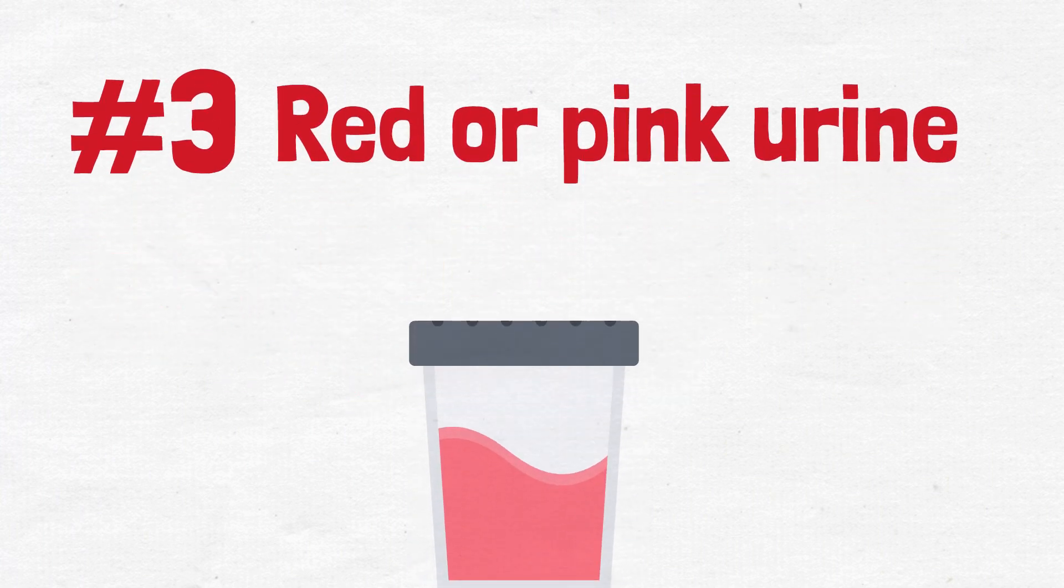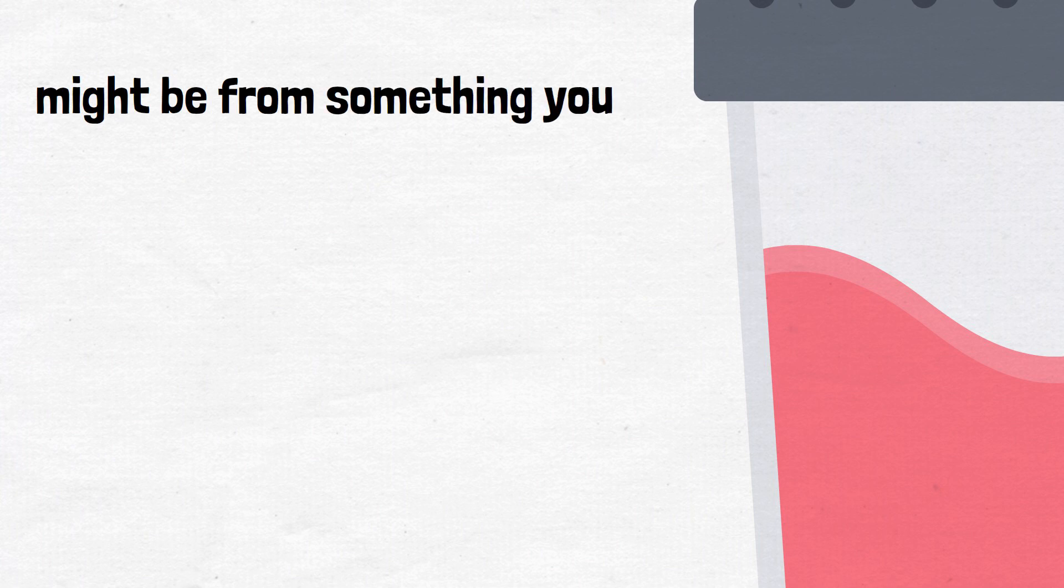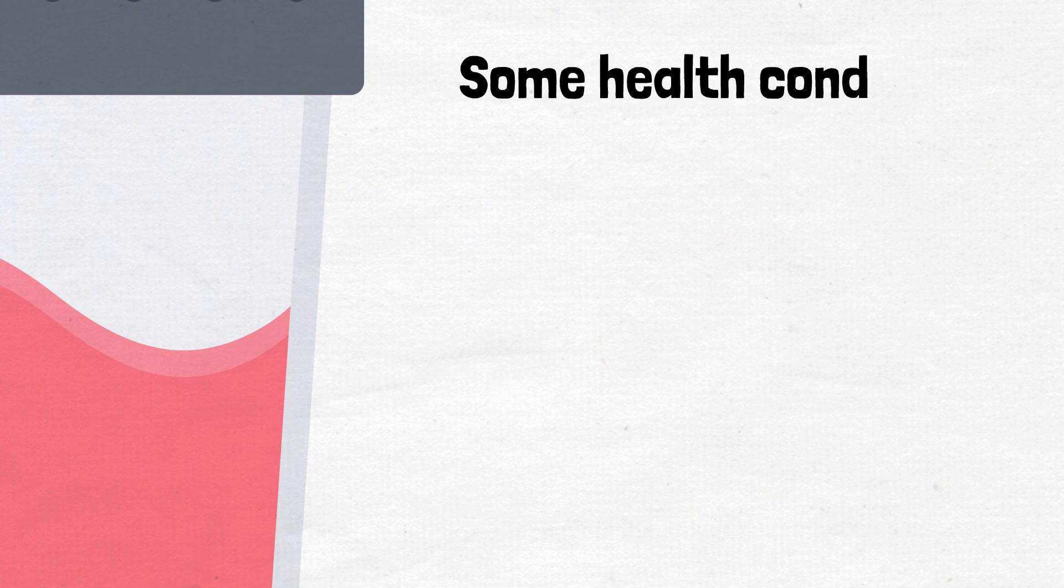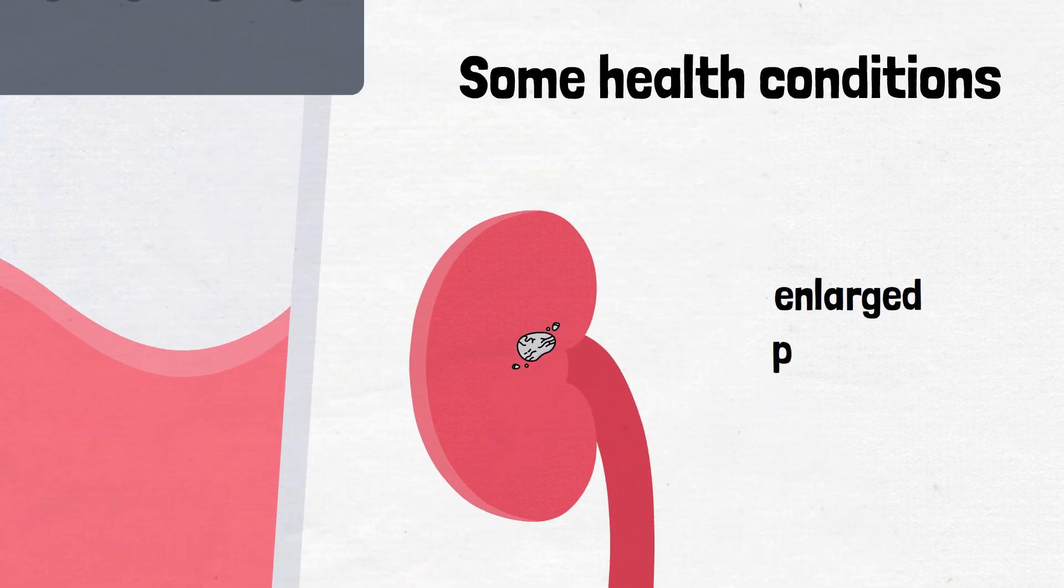While red or pink urine might be from something you ate or medications you took recently, there are sometimes other causes. Some health conditions can cause blood to appear in your urine, such as kidney stones, an enlarged prostate, and tumors in the bladder and kidney.